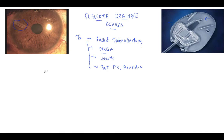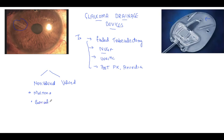Glaucoma drainage devices can be classified into two broad parts: non-valved tubes and valved tubes. The non-valved tubes — you just have to remember the names — are Molteno, the most important Baerveldt, and Schocket. Out of these, the most important is Baerveldt.